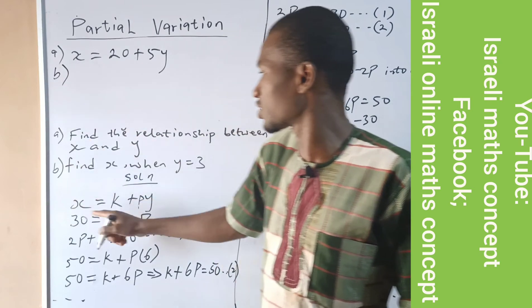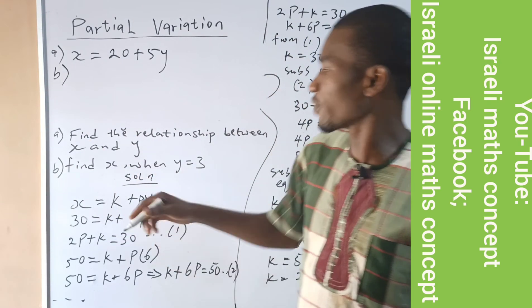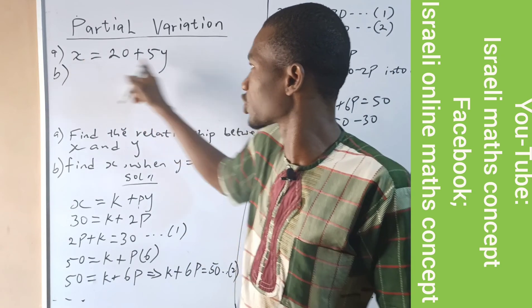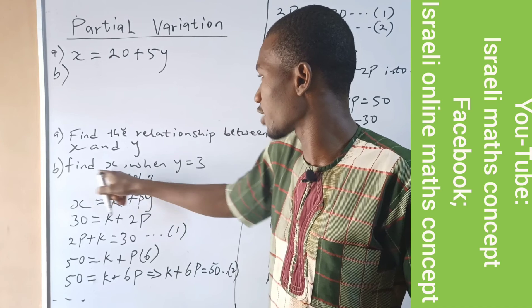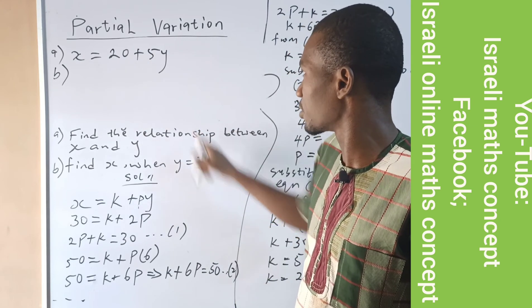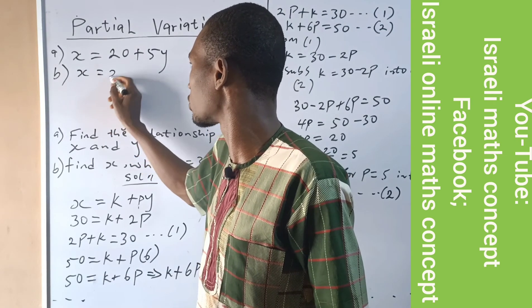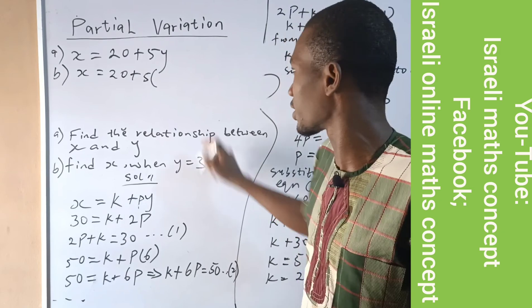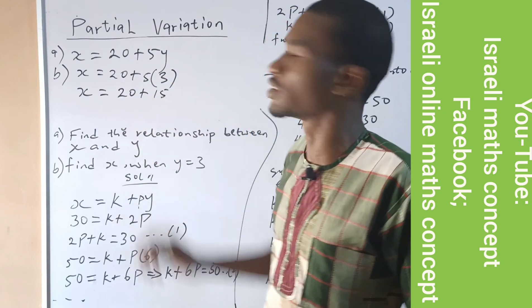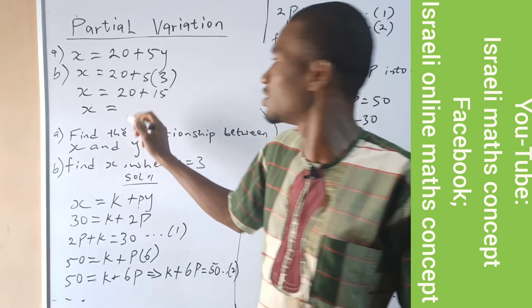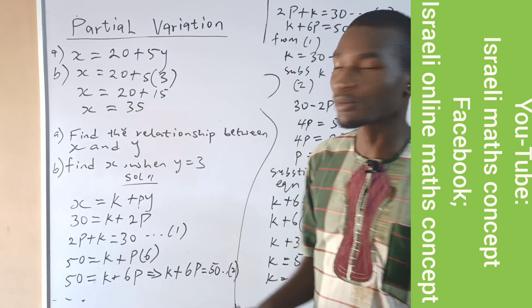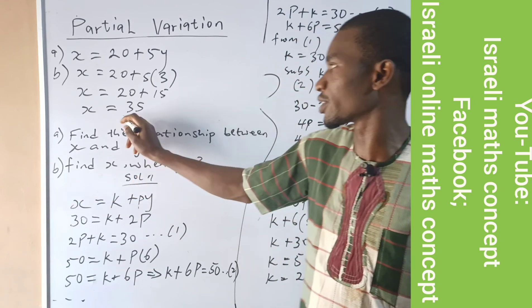We also have part b, which says find x when y is equal to 3. Coming to the relationship x equals 20 plus 5y, we replace y with 3. So x equals 20 plus 5 times 3, which is 15. Therefore x equals 20 plus 15, which is 35. We have found the relationship between x and y, and x equals 35 when y equals 3.